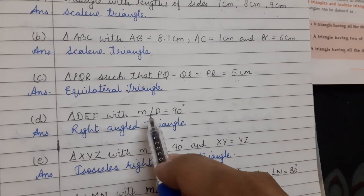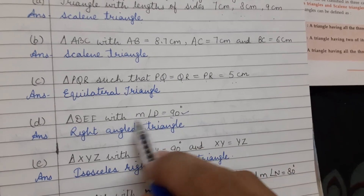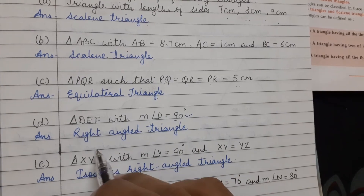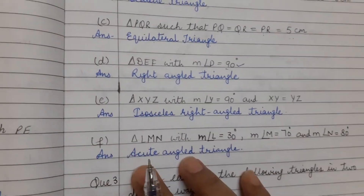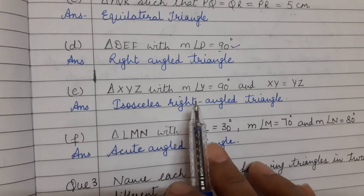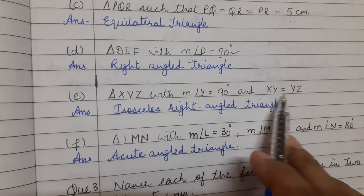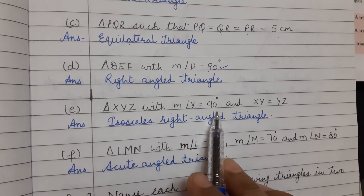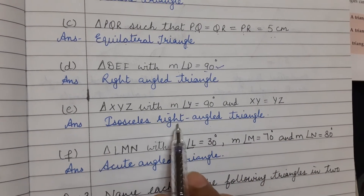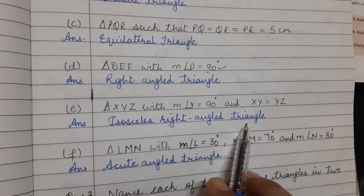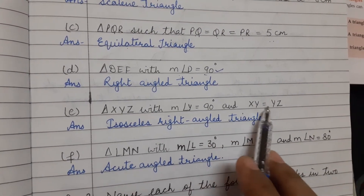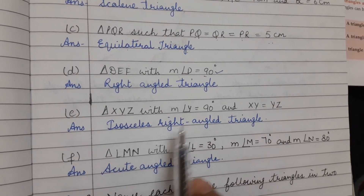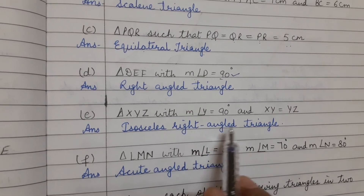Triangle DEF with measure of angle D = 90 degrees. Here one angle is 90 degrees, so this type of triangle is a right angled triangle. Triangle XYZ with angle Y = 90 and XY = YZ. Two sides are of equal length and angle Y is 90 degrees, so this is an isosceles right angled triangle.